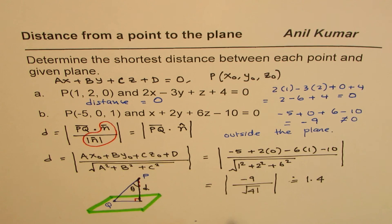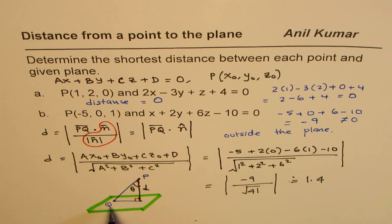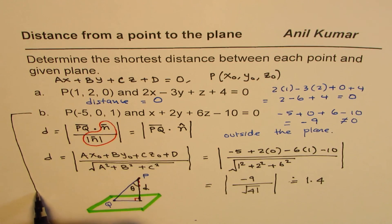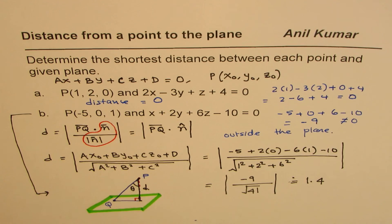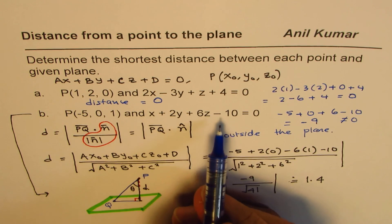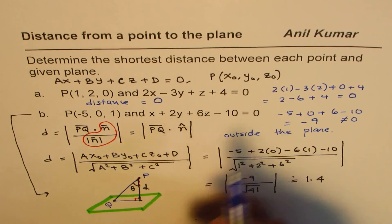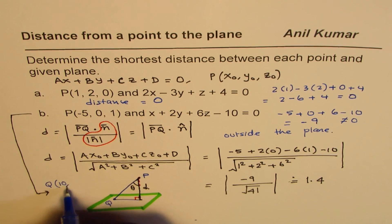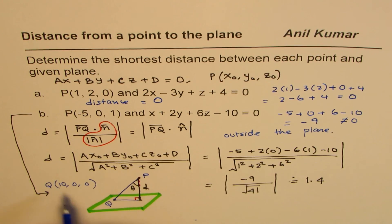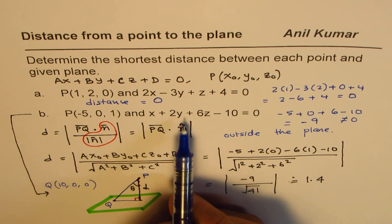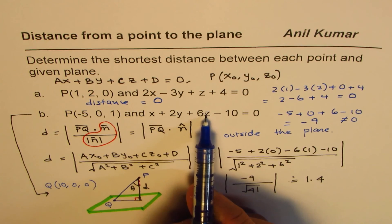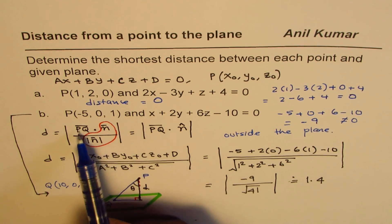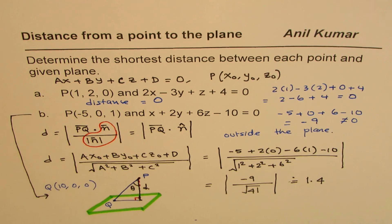So, this is a good formula to apply. And Q should be selected as a convenient point. For example, in this particular case, let me redo this. In this particular case, Q should be selected as, you can say, Y and Z is 0. So, what is X? X is 10. So, we can say Q is 10, 0, 0. So, you could select Q as a very convenient point, placing zeros for Y and Z. X is 10. Once you know that, then you can apply this formula and check the distance.